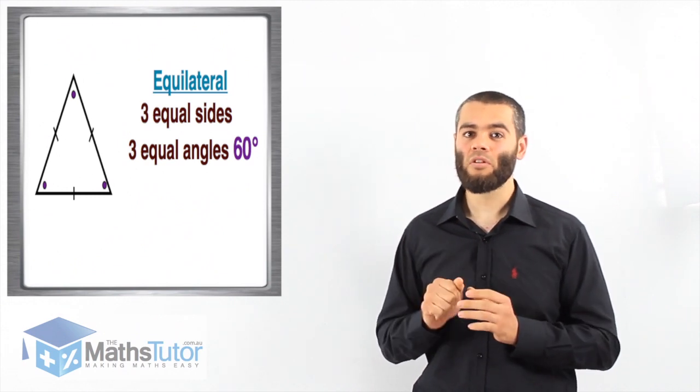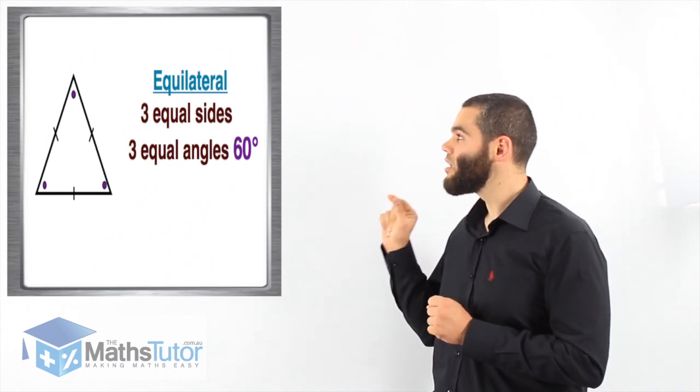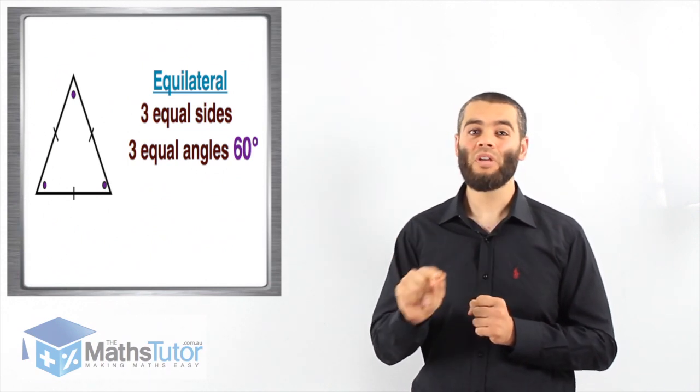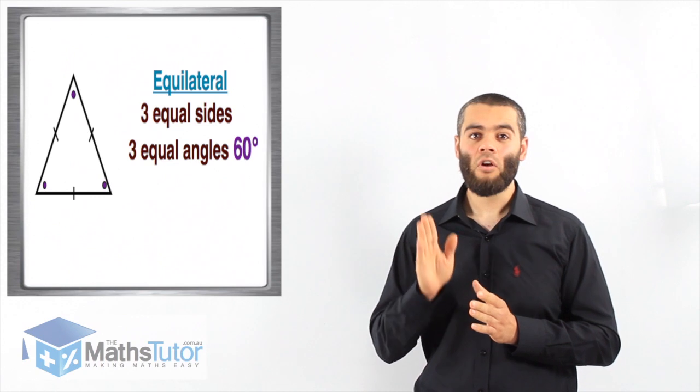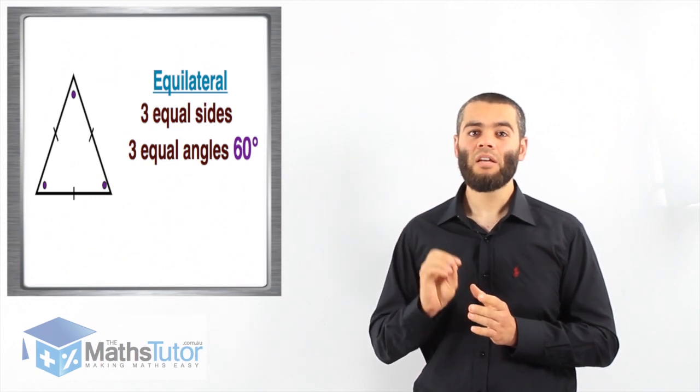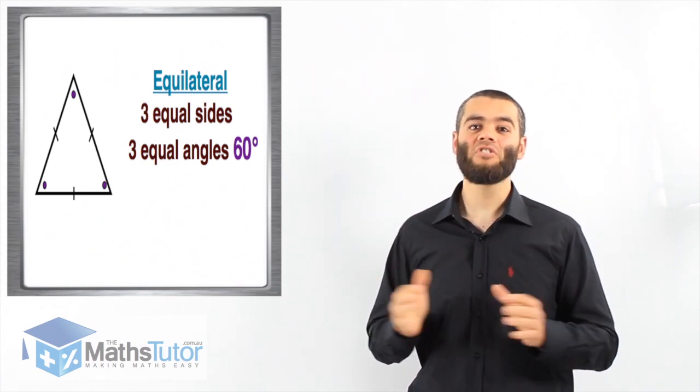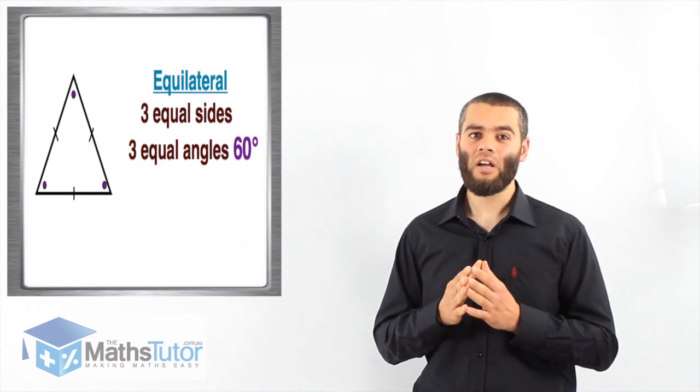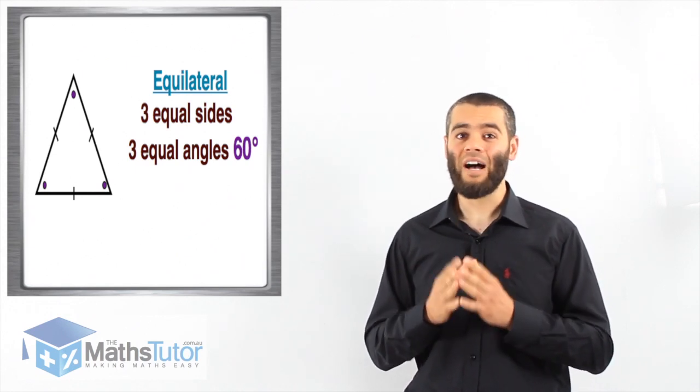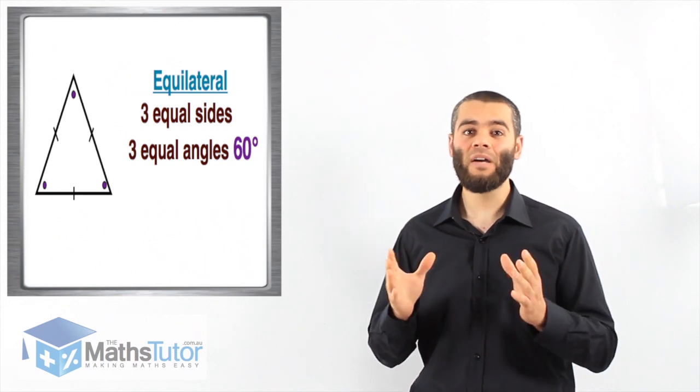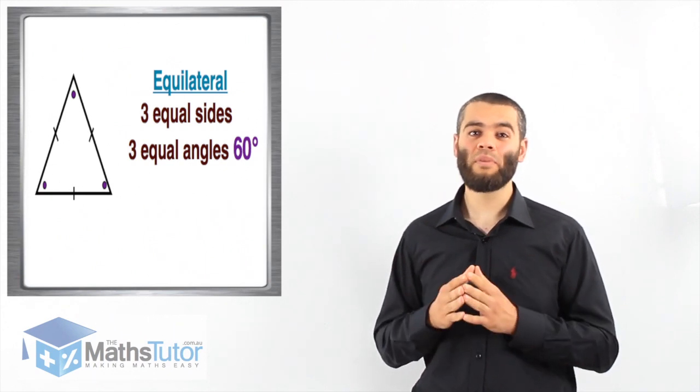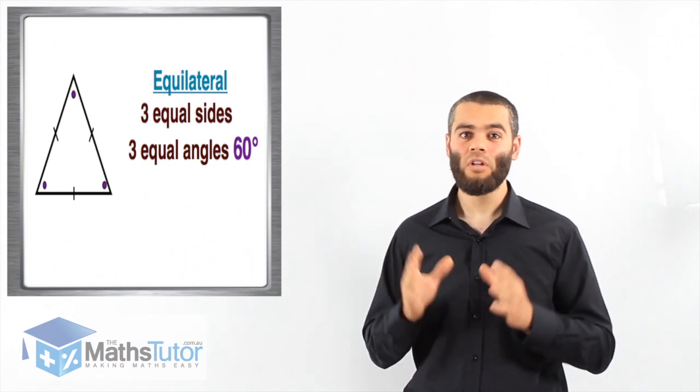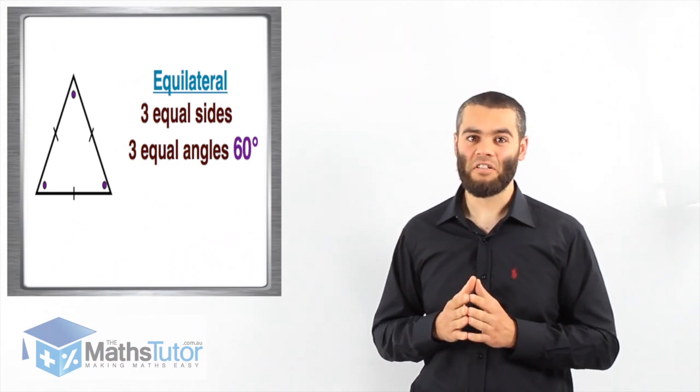Now, a very important feature in equilateral triangles is that they have three equal angles, and each one is 60 degrees. It doesn't change. Whether the triangle has a side of 10 or a side of 100, it doesn't matter. The angle will always be 60, 60, and 60. So in an equilateral triangle, the angles are always 60 degrees each.